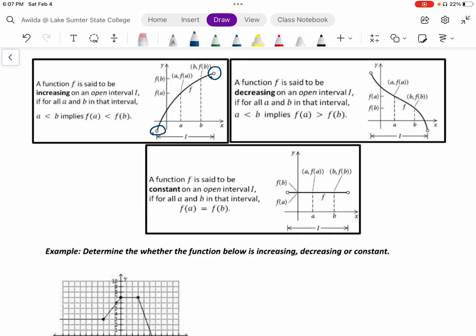Because as the x values grow, meaning as we move from left to right in the graph, the corresponding y values also grow, meaning the ordered pairs keep climbing.